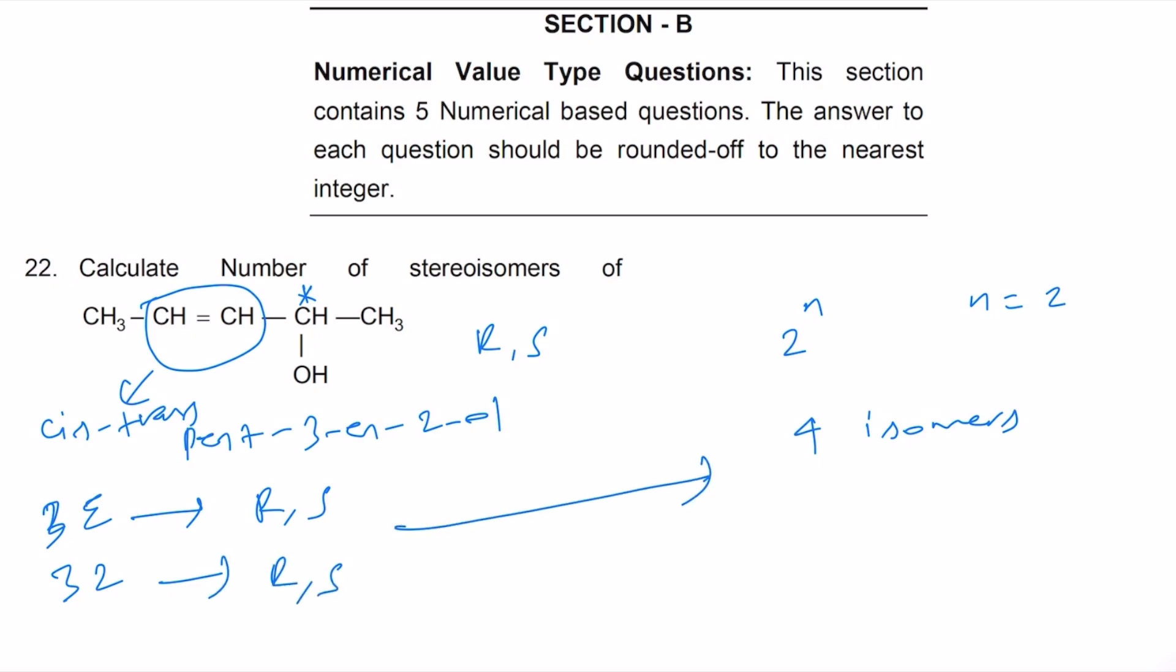Therefore 4 isomers is the correct answer here. Let me draw the isomer this way: C has C double bond C, hydrogen on this side and then hydrogen on the other side, then we have a chiral carbon and then OH.